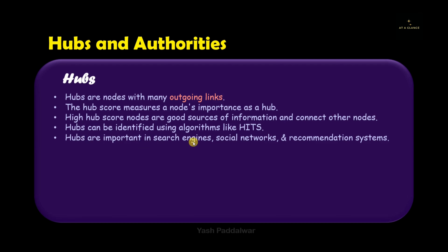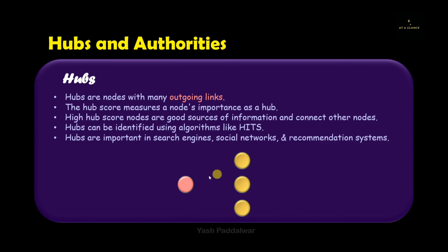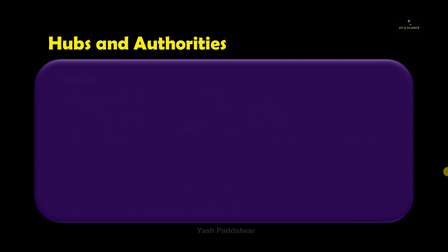Hubs can be identified with the help of the HITS algorithm. These hubs are very important in search engines, social networks, as well as recommendation systems. For example, here we have one node surrounded by many other nodes. If this particular node is pointing to all the other nodes in this scenario, it is called a hub — it is a good source of information because it connects the other nodes, i.e., the web pages.